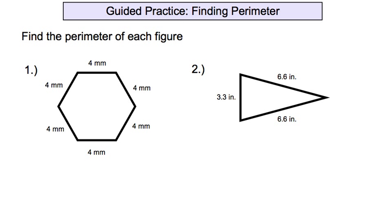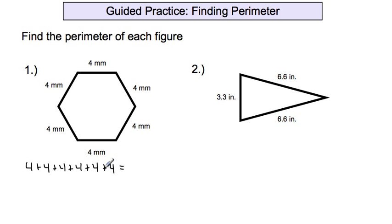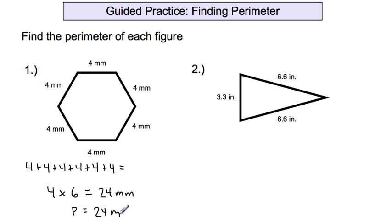Now let's do some guided practice. The first one: if you have a regular polygon — meaning all the angles and all the sides are the same length — you can use multiplication. We have a hexagon with six sides, each exactly the same length — all four millimeters. So instead of adding four plus four six times, I can multiply: six times four equals 24. The perimeter equals 24 millimeters.